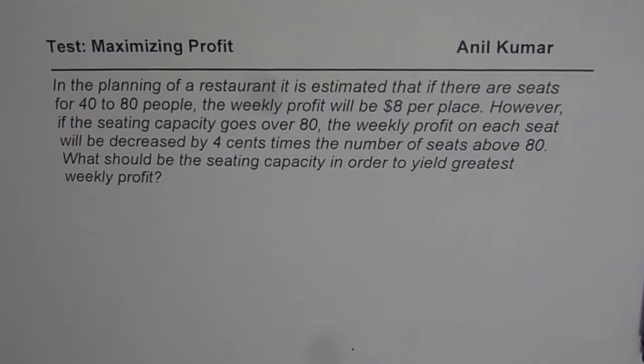The question is, in the planning of a restaurant, it is estimated that if there are seats for 40 to 80 people, the weekly profit will be $8 per place. However, if the seating capacity goes over 80, the weekly profit on each seat will be decreased by 4 cents times the number of seats above 80. What should be the seating capacity in order to yield greatest weekly profit?